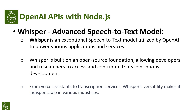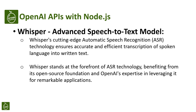Let's now explore OpenAI's cutting-edge speech-to-text model, Whisper. Whisper is an exceptional speech-to-text model utilized by OpenAI to power various applications and services. Whisper is built on an open-source foundation, allowing developers and researchers to access and contribute to its continuous development. From voice assistance to transcription services, Whisper's versatility makes it indispensable in various industries. Whisper's cutting-edge automatic speech recognition technology ensures accurate and efficient transcription of spoken language into written text, benefiting from OpenAI's expertise in leveraging it for remarkable applications.